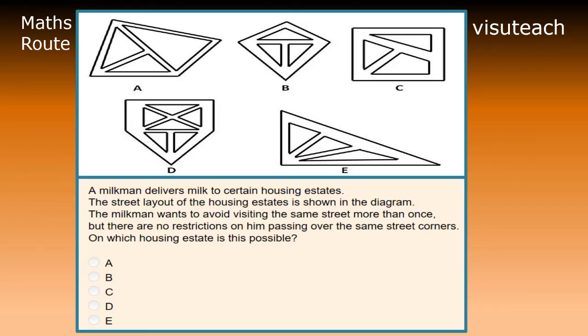A milkman delivers milk to certain housing estates. The street layout of the housing estates is shown in the diagram. The milkman wants to avoid visiting the same street more than once, but there are no restrictions on him passing over the same street corners. On which housing estate is this possible?